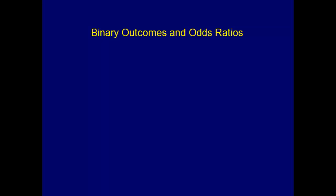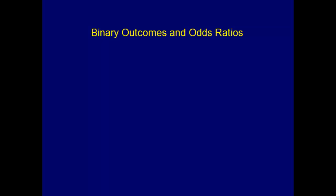We need to get acquainted with binary outcomes, so let's start with where we've been before. You've seen this slide several times now — let's just review it. What we're looking at here is two continuous variables: variable A and variable B. These diagrams represent all of the data in our data set, and here we can see that as variable A increases, variable B tends also to increase.